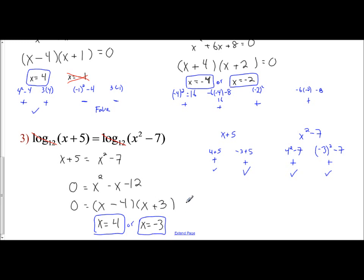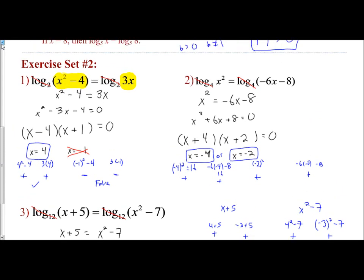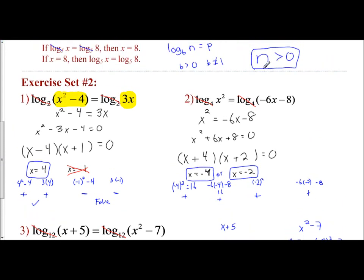The bottom line for the property of equality of logarithms: if you have one log on the left side and one log on the right side with the same base, you can ignore them and set the expressions equal to each other and solve. The key is to always check your x values to confirm they fit the definition of logarithms — the expression you are taking the logarithm of must be greater than 0. Plug your solutions in to verify whether one or both are valid.